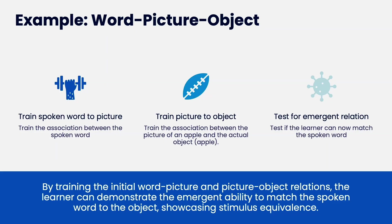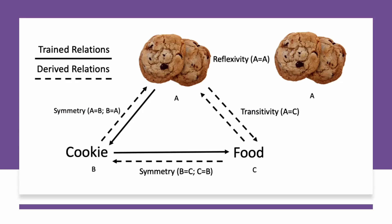In practice, you train the spoken word to the picture — the association between the spoken word and the picture. Then train the picture to the object — for example, the picture of a football matches the football object. Then test if the object maps to the verbal word. On a diagram, the trained relations are solid lines and derived/emergent ones are dashed. For example, you match 'cookie' to a real cookie, then match 'cookie' to the word 'food' because a cookie is food. The emergent relations — the dashed lines — mean they could say 'cookie' or 'food' when shown a cookie.